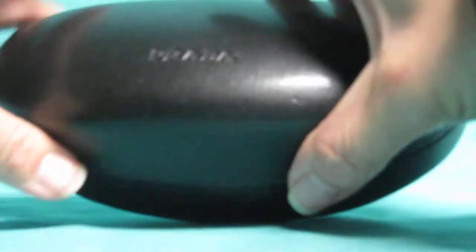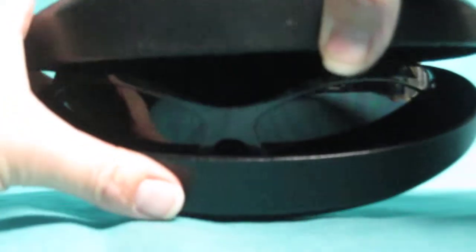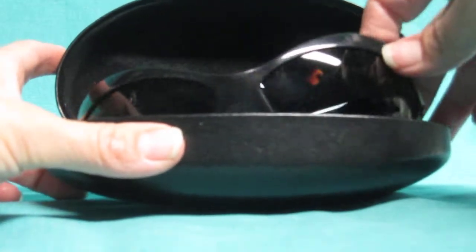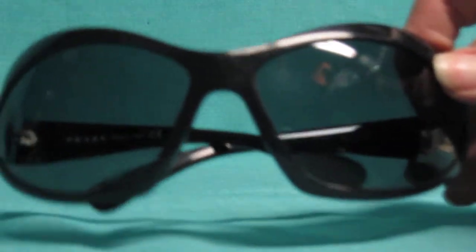In this box is a wonderful pair of vintage Prada sunglasses. The box is lined in a velvet material and here they are.